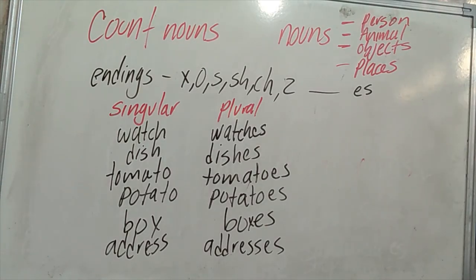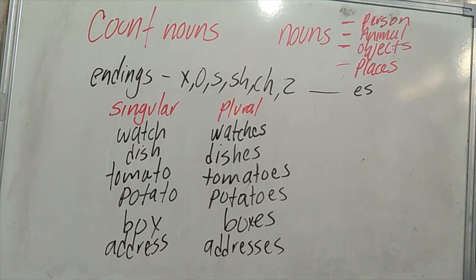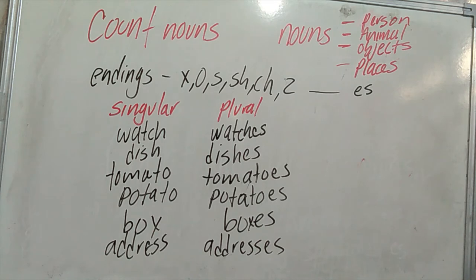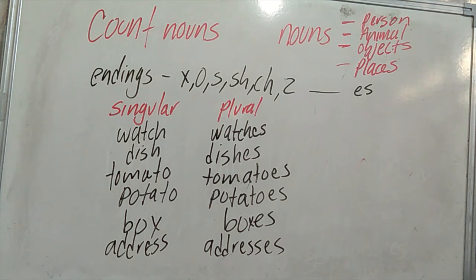We want to start by analyzing count nouns. First, what is a count noun? A noun is a kind of person — for example, Laura, Susana, Gerardo, George. It can also be an animal — a lion, a giraffe — or an object like an eraser, a radio, etc. Any place, for example school, church, gym. Also days and names.